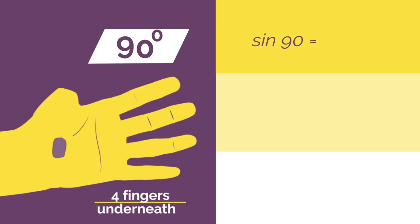If we wanted sine 90 degrees, you'd bend down your 90 degree thumb and so you have four fingers underneath. So sine 90 is square root of 4 divided by 2, which simplifies to 1.